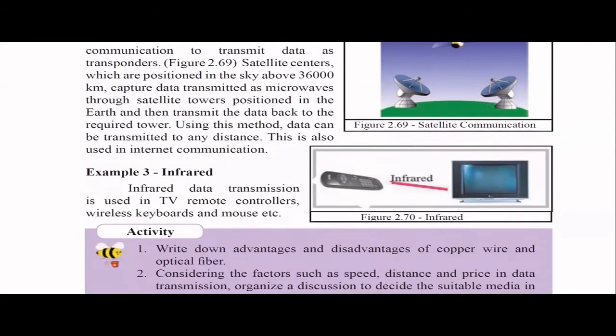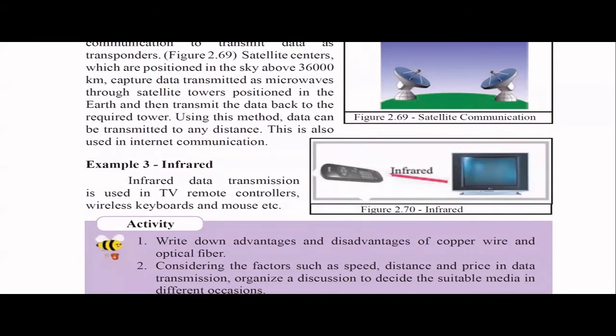Then comes infrared, which you may already know. TV remotes use infrared. The limitation is that infrared cannot pass through obstacles. Wireless keyboards and mouse devices also use infrared for data transmission.